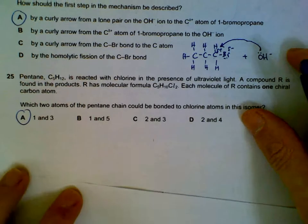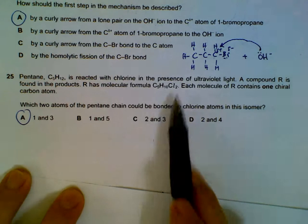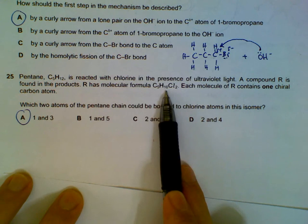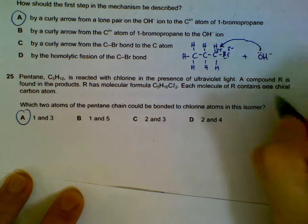Pentane is reacted with chlorine and then we get this molecule coming out where there are two chlorines attached. That means two hydrogens are removed and then replaced by two chlorines. Each molecule contains one chiral carbon.